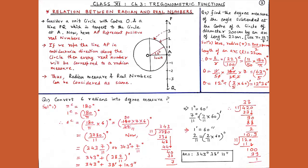Our next question: find the degree measure of the angle subtended at the center of a circle of diameter 200 cm by an arc of length 22 cm, using π equals 22/7. Since the diameter is 200 cm, the radius R equals 200 upon 2 equals 100 cm. The arc length L equals 22 cm. We use theta equals L upon R, so theta equals 22 upon 100, giving 11 upon 50.